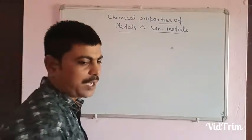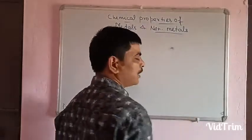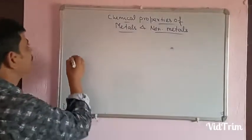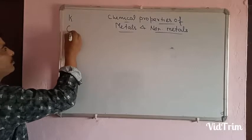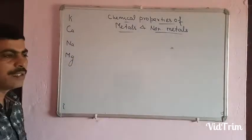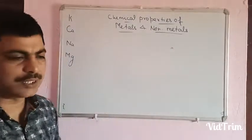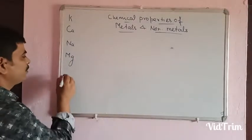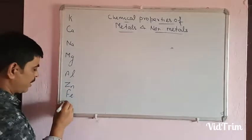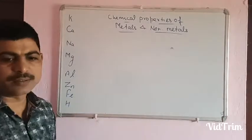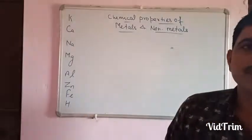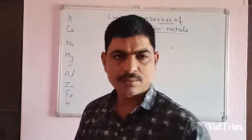Students, first of all we have to learn the reactivity series. This is Potassium, Calcium, Sodium, Magnesium. This is the reactivity series. Afterwards: Aluminium, Zinc, Iron, Hydrogen. And further down there are elements like Copper, Mercury, Silver, Gold.